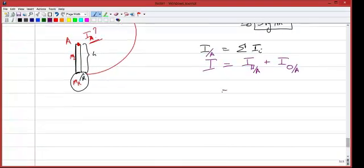Therefore, the first term needs to be broken up into two: I of the rod about its center of mass, plus the mass of the rod times delta squared. And as we mentioned, this delta squared is going to be L over 2 squared.